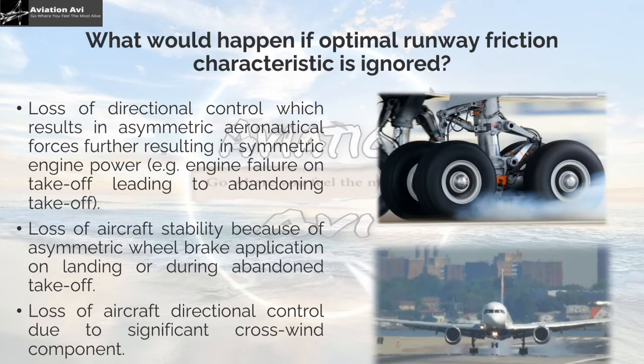What would happen if optimal runway friction characteristics are ignored? First, loss of directional control resulting in asymmetric aeronautical forces, further resulting in asymmetric engine power — that is, engine failure on takeoff leading to abandoning the takeoff. Second, loss of aircraft stability due to asymmetric wheel brake application on landing or during an abandoned takeoff. Third, loss of aircraft directional control due to a significant crosswind component. In each case, runway surface friction plays a vital role in counteracting these forces.